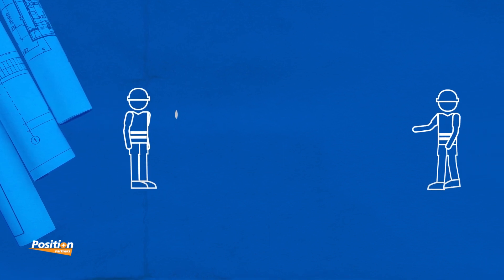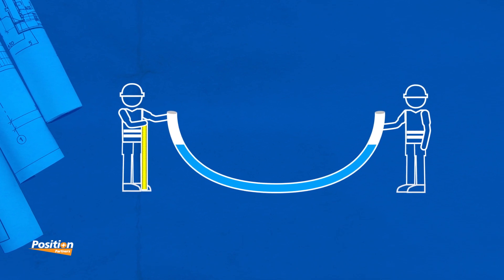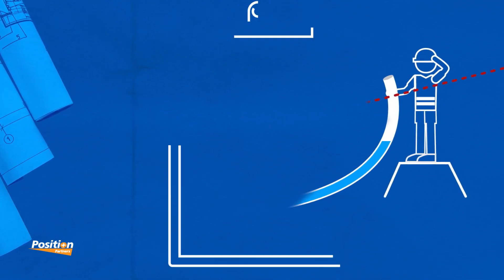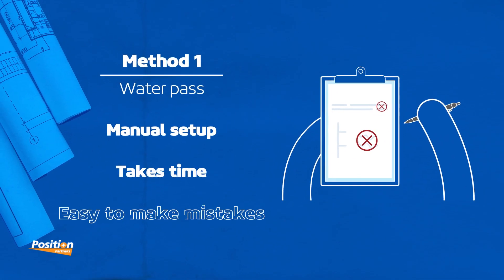The water pass is an old method for checking levels that is simple. However, it requires skill to set up and is only as good as the measurements that are used. Using this method for slopes or complex designs is not simple and can lead to easy mistakes.